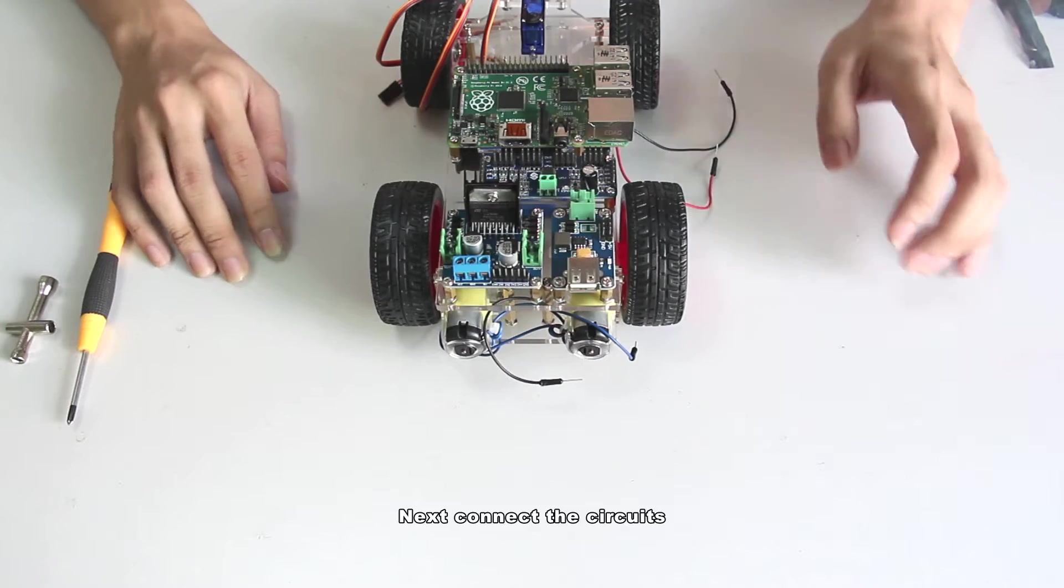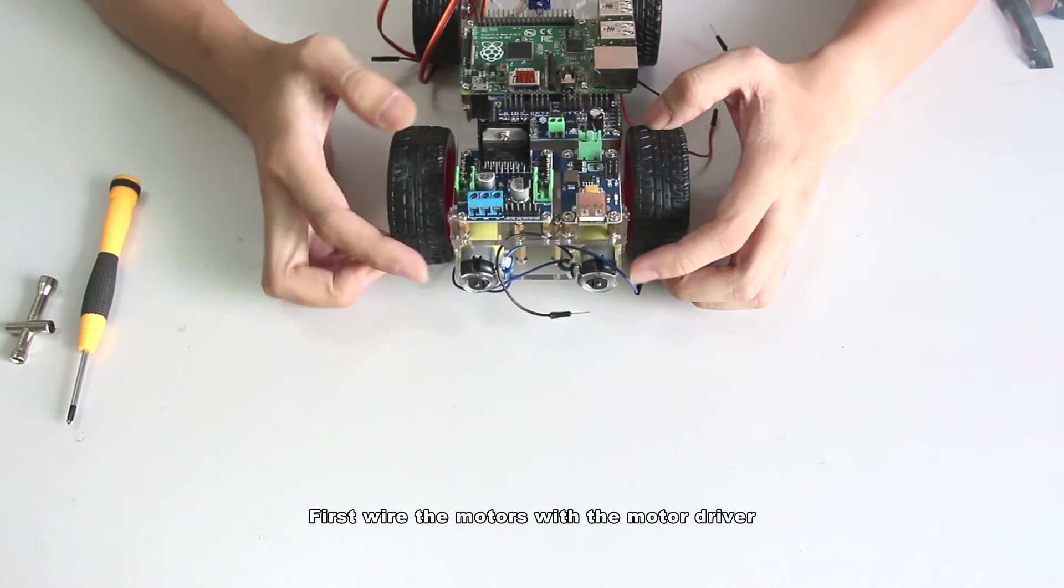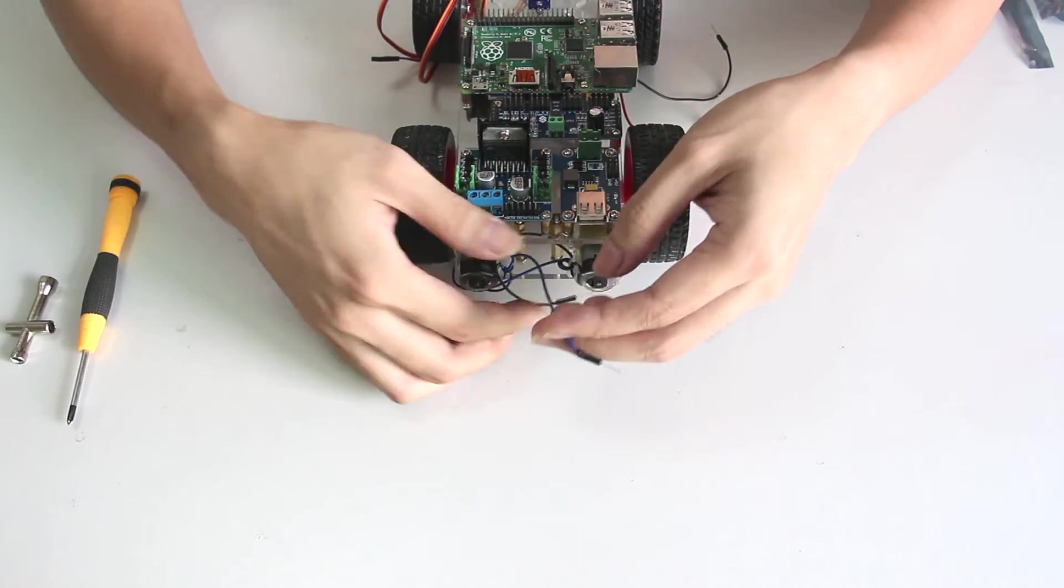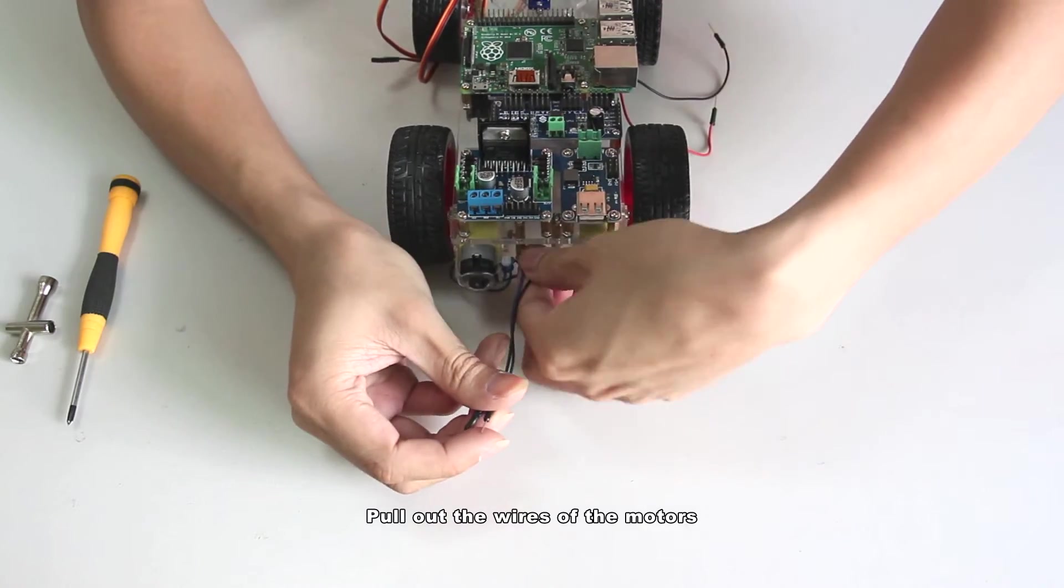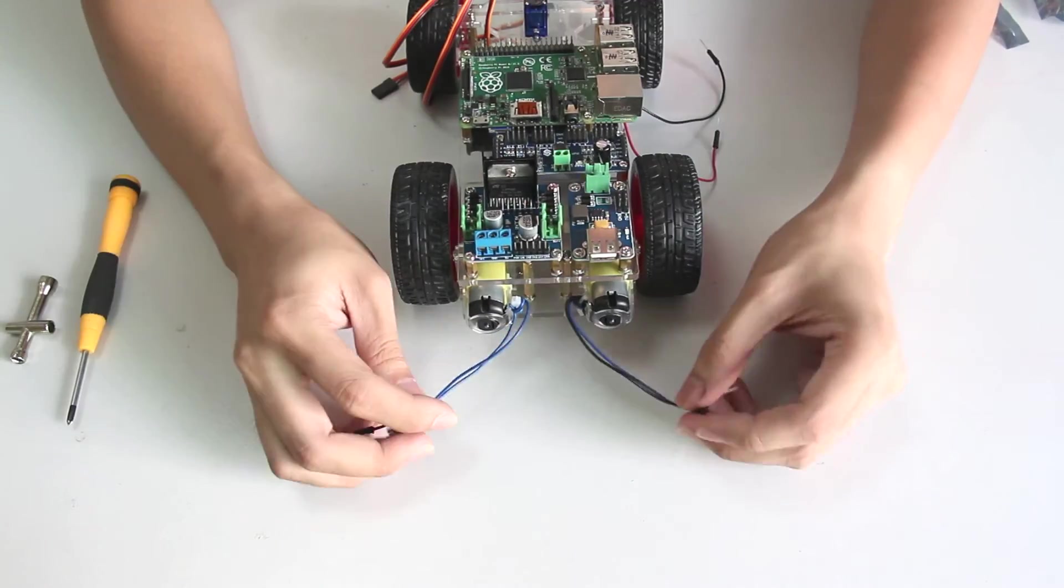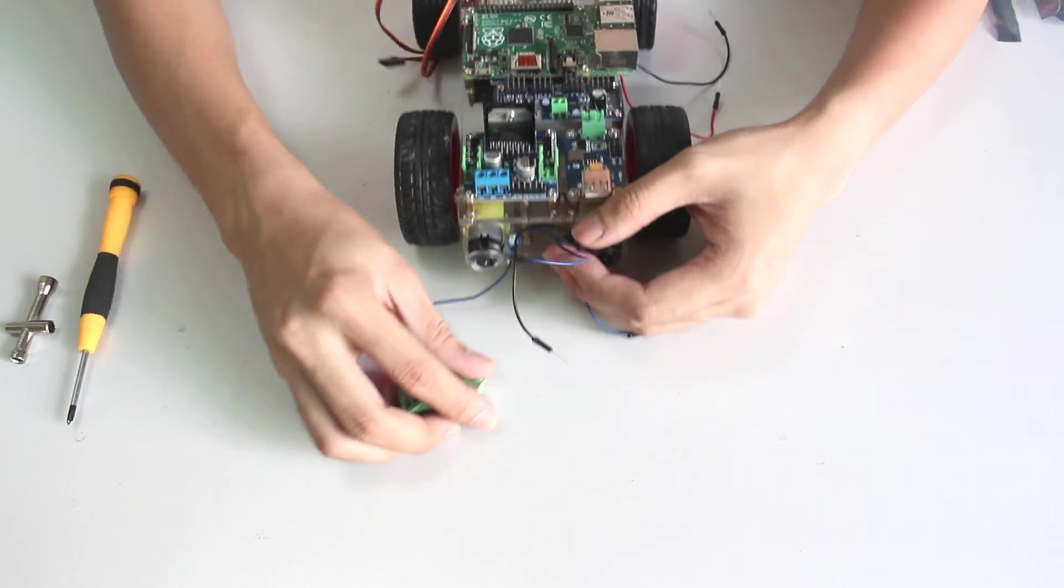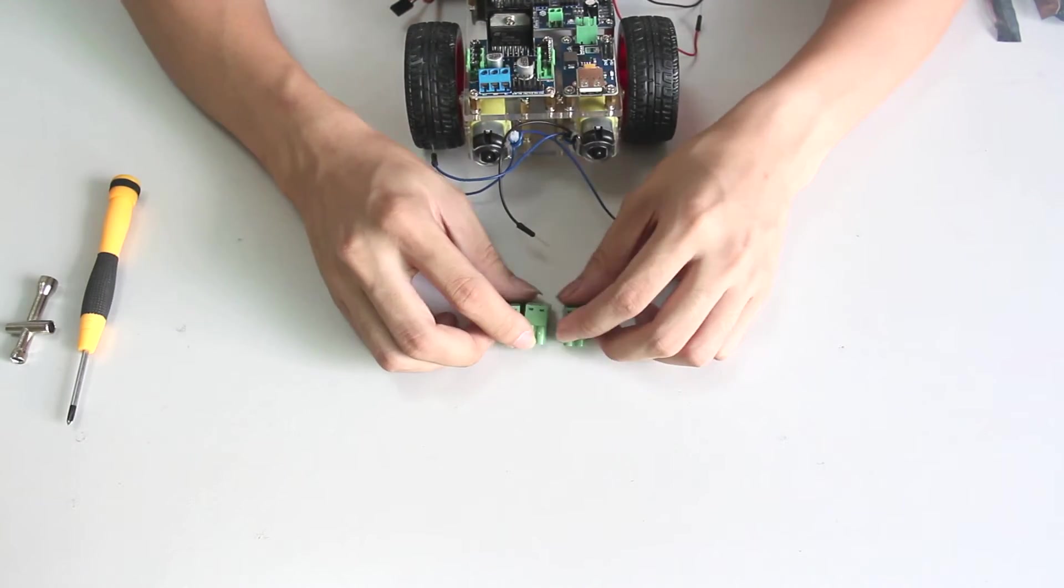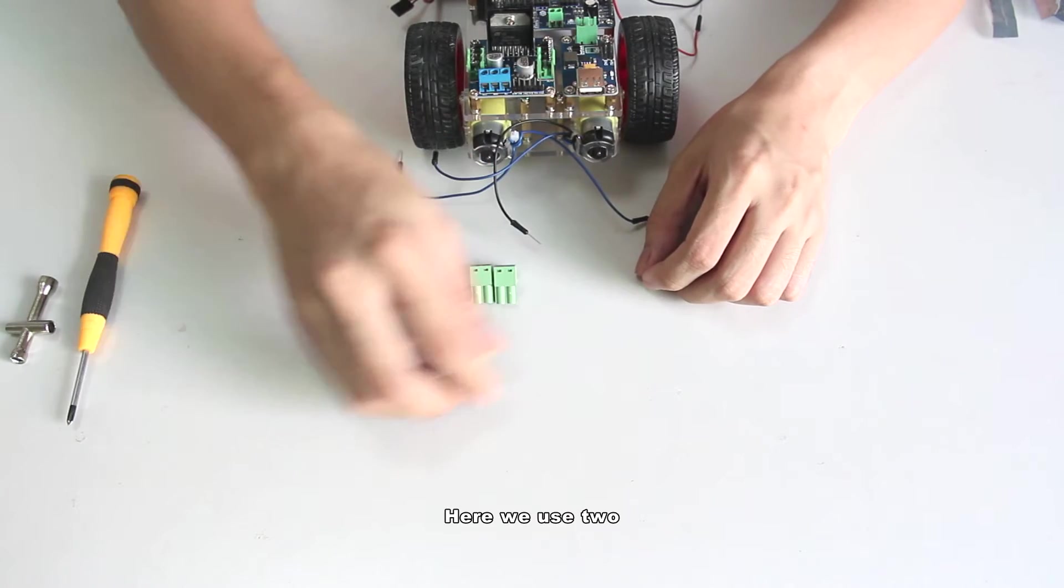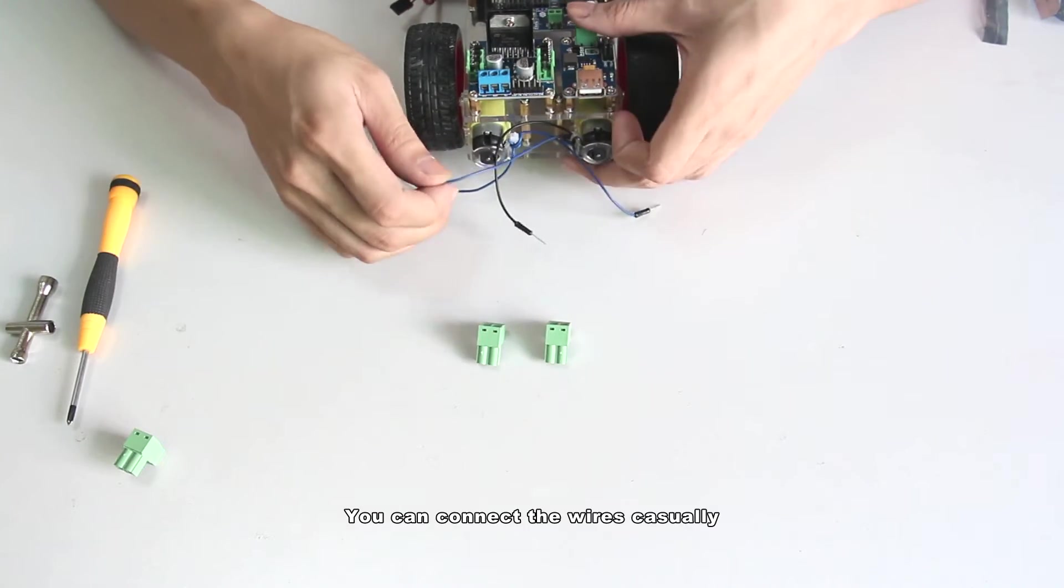Next connect the circuits. First wire the motors with the motor driver. Pull out the wires of the motors. Take the two wires of a motor and the connectors. Here we use two. You can connect the wires casually.